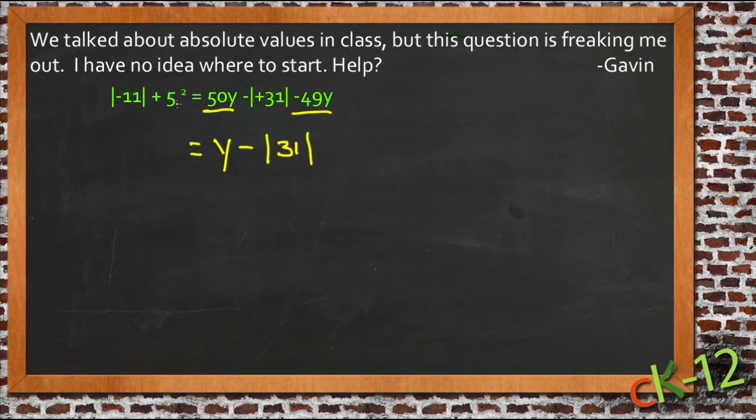Then on the other side of the equation, we also already know what 5 squared is, so there's no reason to write that confusing notation. We can just say 25. And inside the absolute value equation, we just have negative 11.